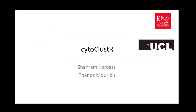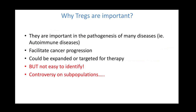Hello everyone, this is Shram Kordasti from King's College London. Today we're going to have a webinar about finding T-regs in healthy donors as well as patients. I'll do this webinar jointly with Thanos, the bioinformatician working with us. I'm going to talk about T-regs — first, why T-regs are important. They are important in the pathogenesis of many diseases like autoimmune diseases, they facilitate cancer progression, and can be expanded for therapy or targeted to prevent immunosuppression due to cancer.